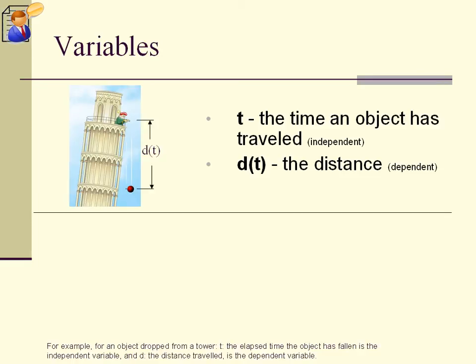For example, for an object dropped from a tower, t, the elapsed time the object has fallen is the independent variable, and d, the distance traveled, is the dependent variable.